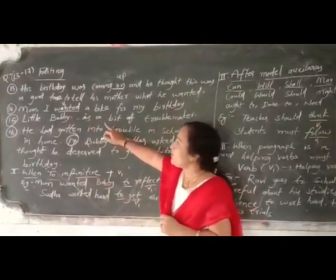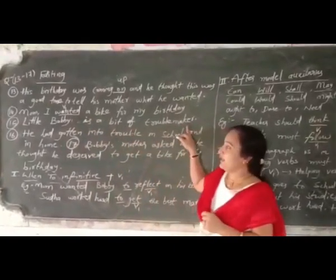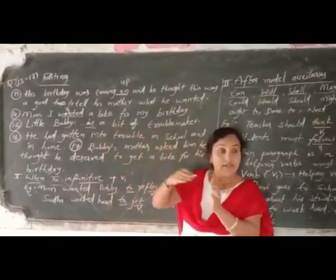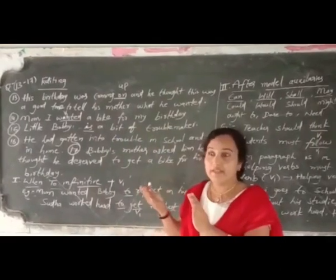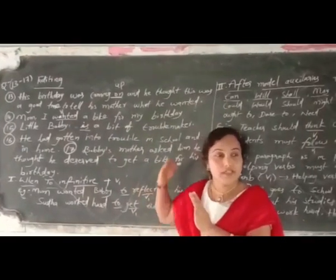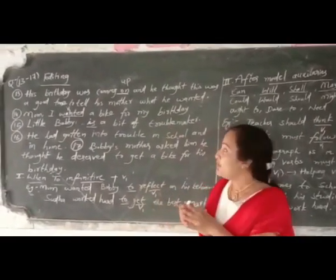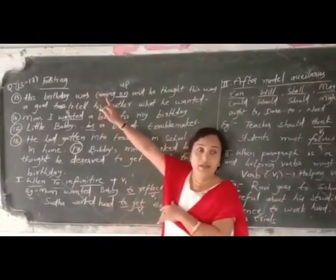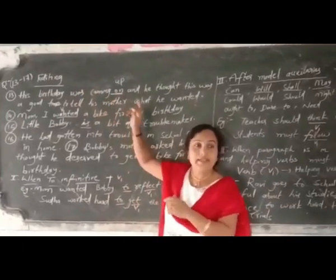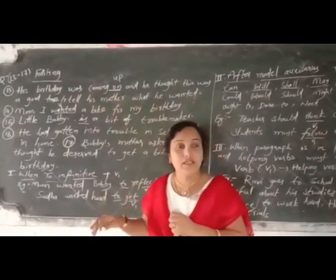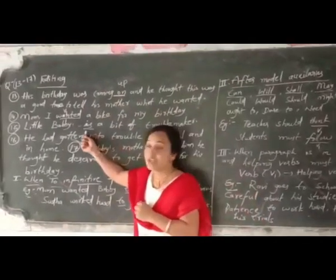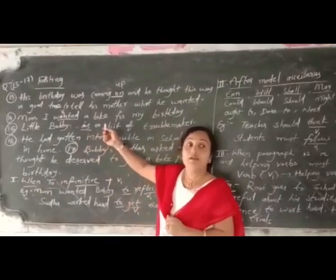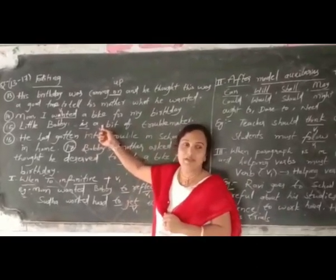And here: 'Little Bobby is a bit of a problem maker.' In the lesson, at the time of writing, it was in past tense. In the beginning of the paragraph you can see it is in past tense. So you must write 'Little Bobby was a problem maker,' not 'is.' He was a problem maker.